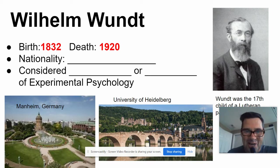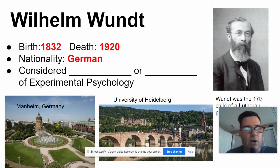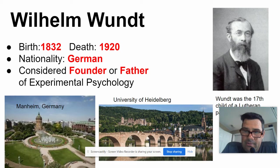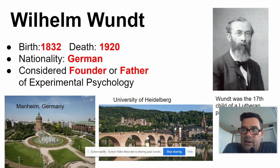The 17th child — the late 19th century was a time of rapid population growth. He is German, and modern psychology really gets going in Germany. He is considered the founder, or father, of experimental psychology. Focus on that word 'experimental' — he wants to create psychology in such a way that you can do experiments and prove it like any science. In reality, that's going to be a little harder than he thinks, but that's his goal.